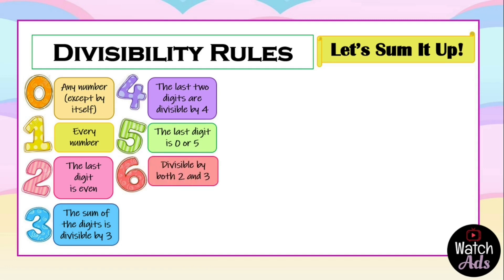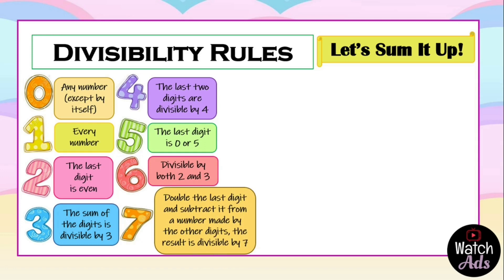A number is divisible by six if it is divisible by both two and three. To test divisibility by seven, we should double the last digit and subtract it from the number made by the other digits — the result should be divisible by seven.